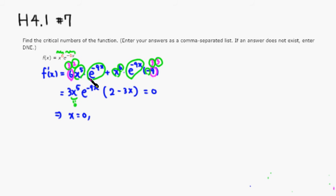All right, and exponential function is never 0, so there's no hope there, but we can make 2 minus 3x equal to 0, by setting x to be 2 thirds. All right, by setting this guy equal to 0, we get 2 thirds.